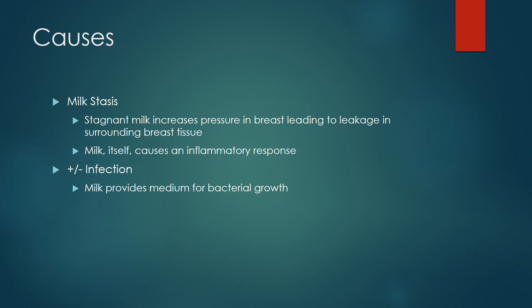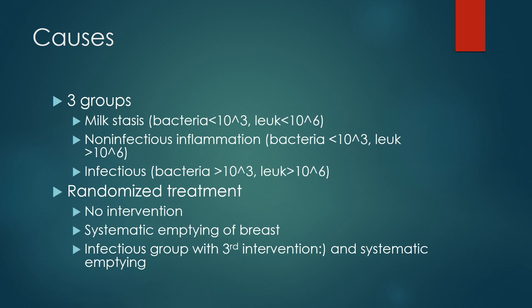Milk stasis: stagnant milk increases pressure in the breast, leading to leakage into surrounding breast tissue. Milk itself causes an inflammatory response plus infection. There are three groups: milk stasis, non-infectious inflammation, and infectious. The infectious group should be treated with systemic emptying and intervention.